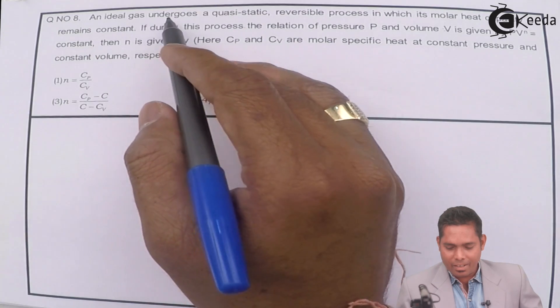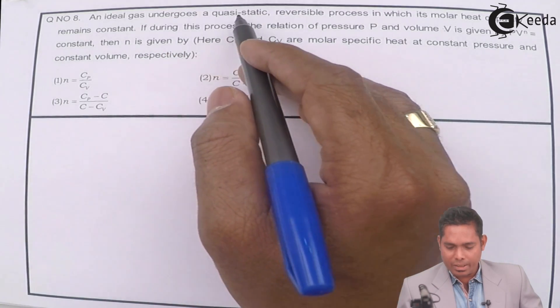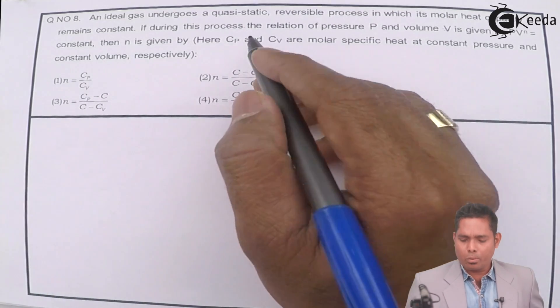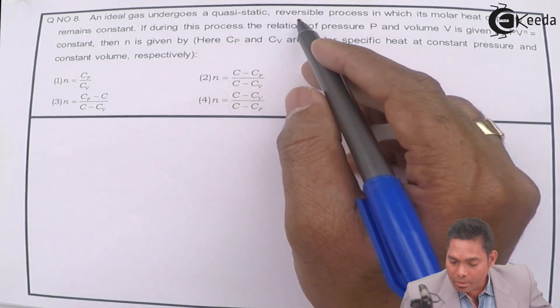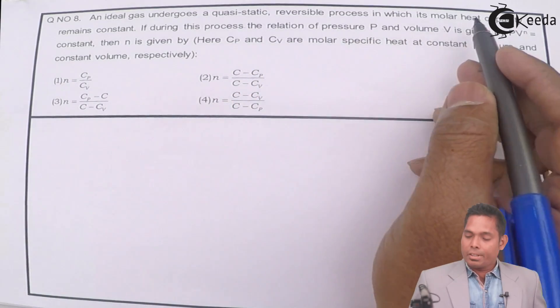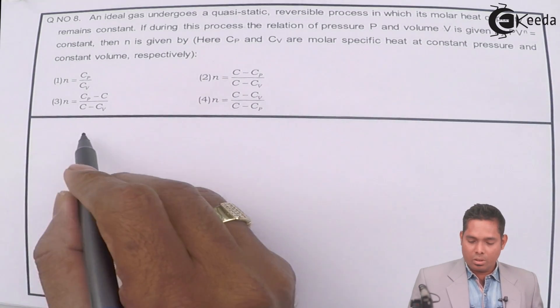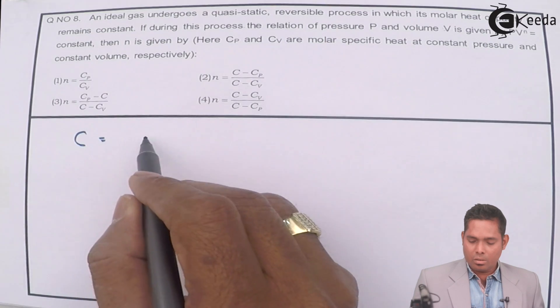An ideal gas undergoes a quasi-static reversible process. The quasi-static process is a very slow process in which its molar heat capacity C remains constant. C is constant.